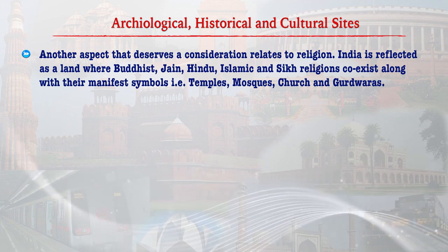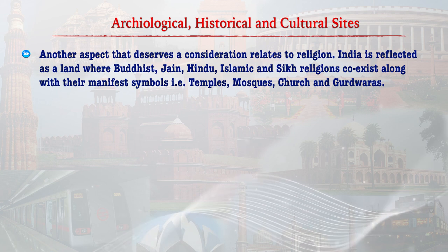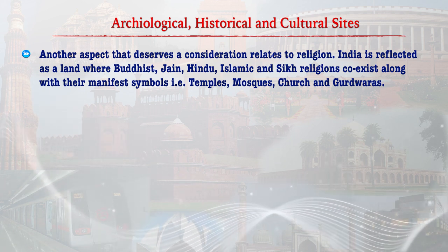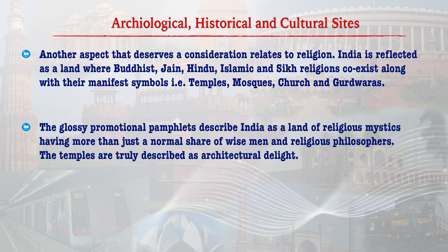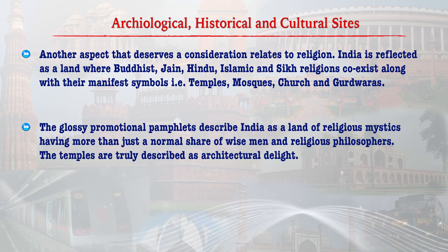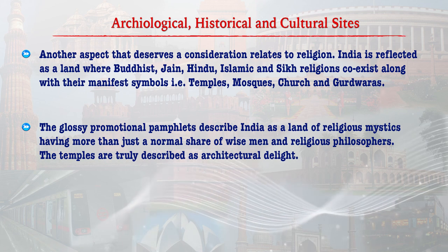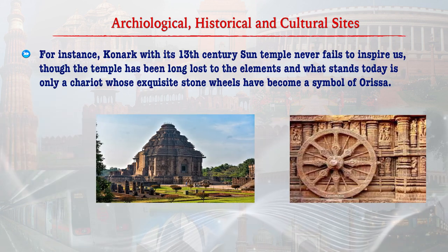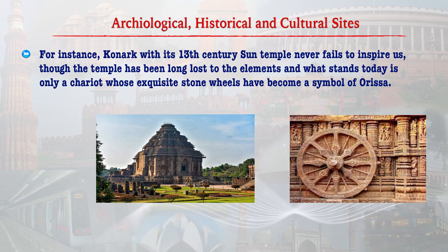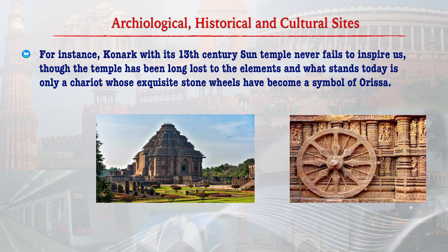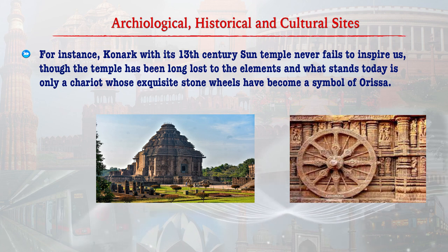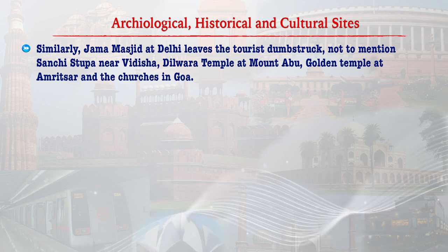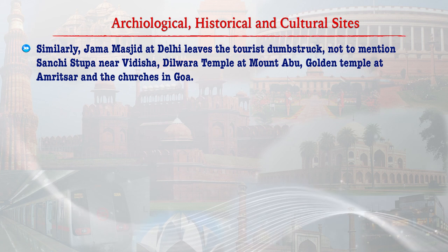Another aspect that deserves consideration relates to religion. India is reflected as a land where Buddhist, Jain, Hindu, Islamic and Sikh religions coexist along with their manifest symbols — temples, mosques, churches and gurudwaras. The glossy promotional pamphlets describe India as a land of religious mystics having more than just a normal share of wise men and religious philosophers. The temples are truly described as an architectural delight. For instance, Konark with its 13th century Sun Temple never fails to inspire. Jama Masjid at Delhi leaves tourists dumbstruck, not to mention Sanchi Stupa near Vidisha, Dilwara Temple at Mount Abu, Golden Temple at Amritsar and the churches in Goa.